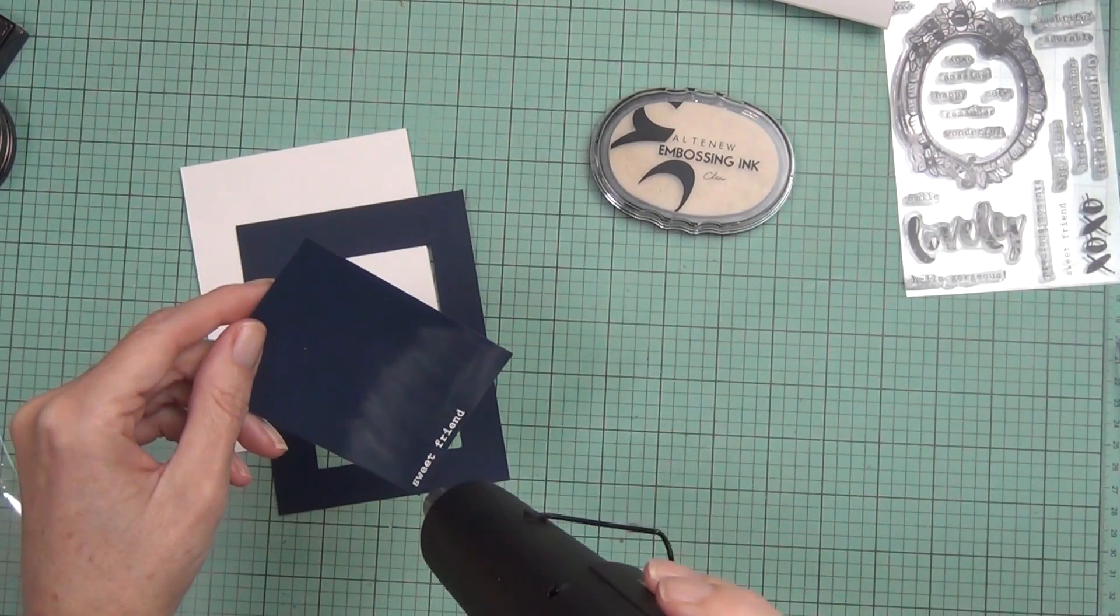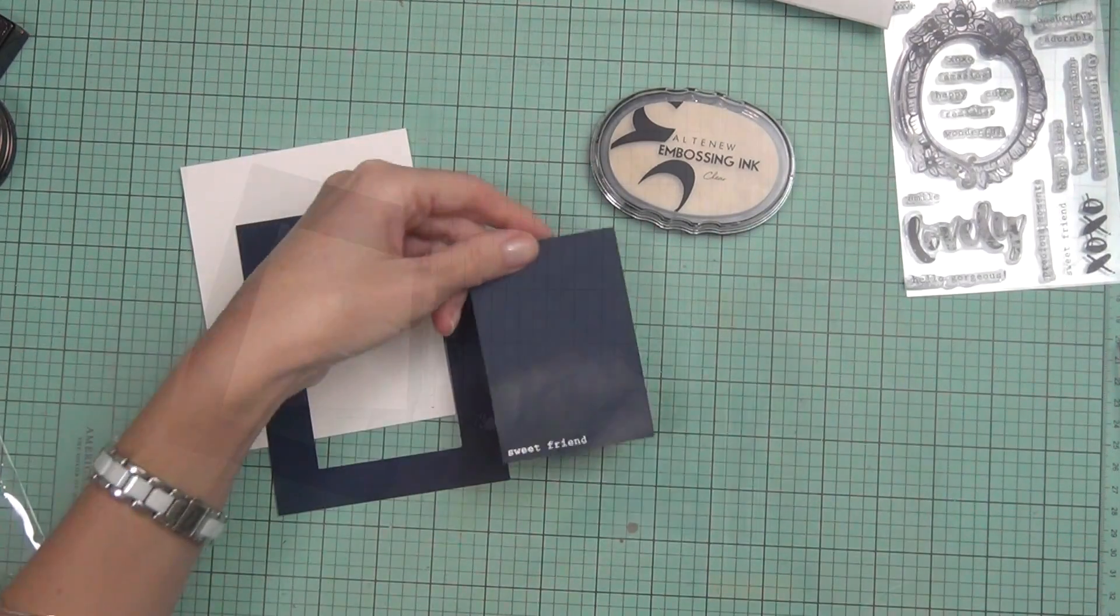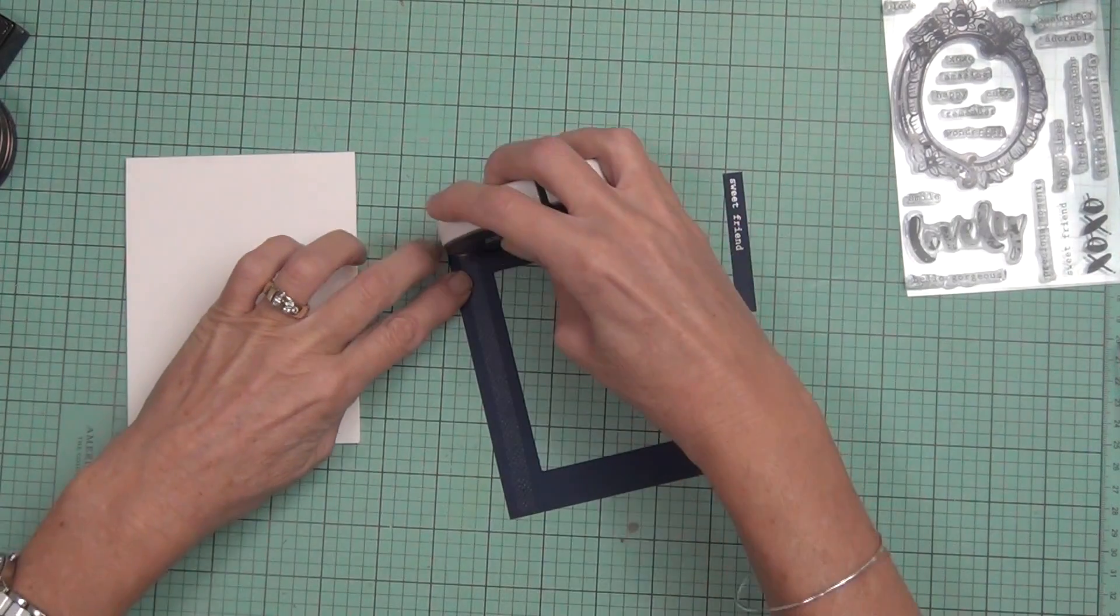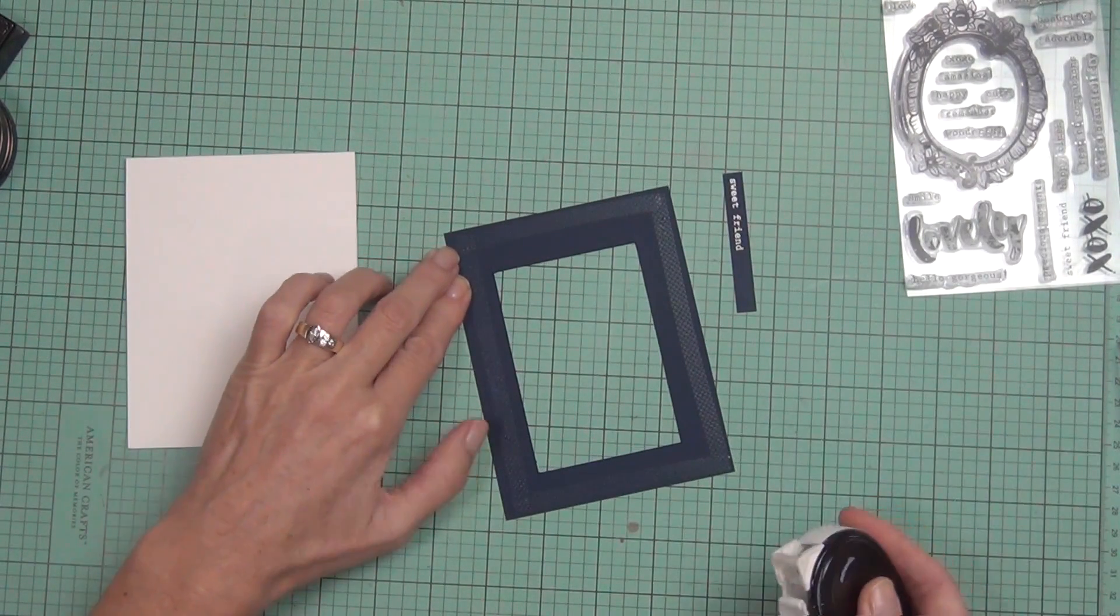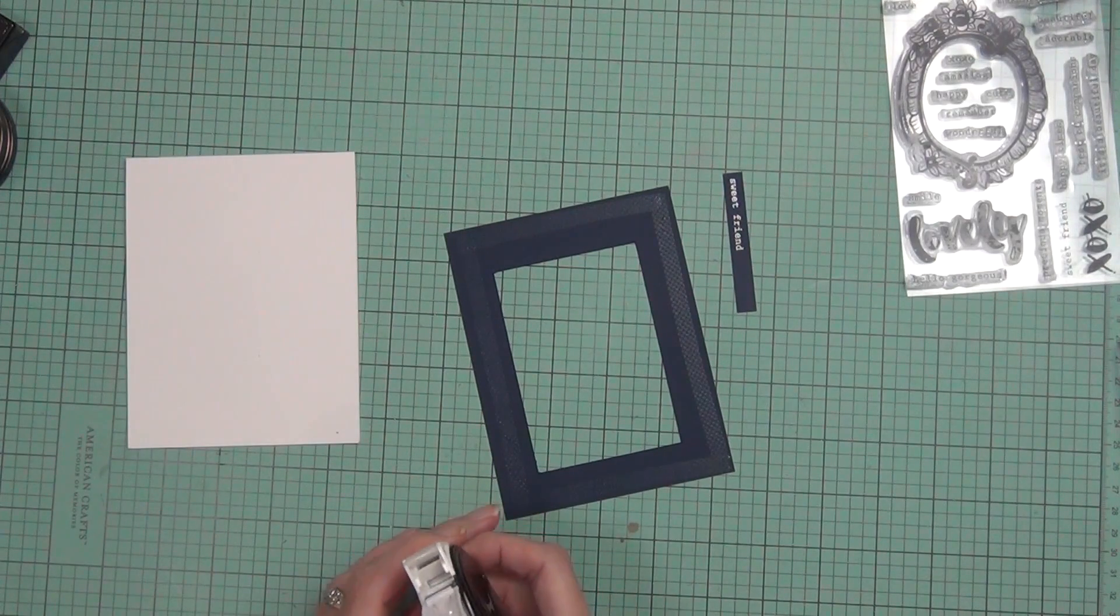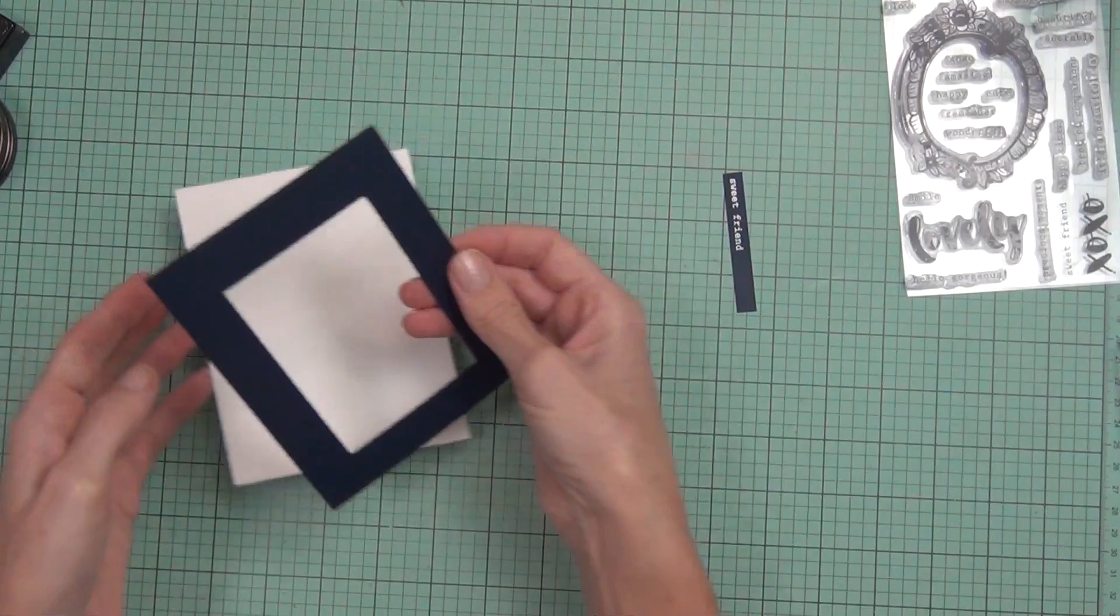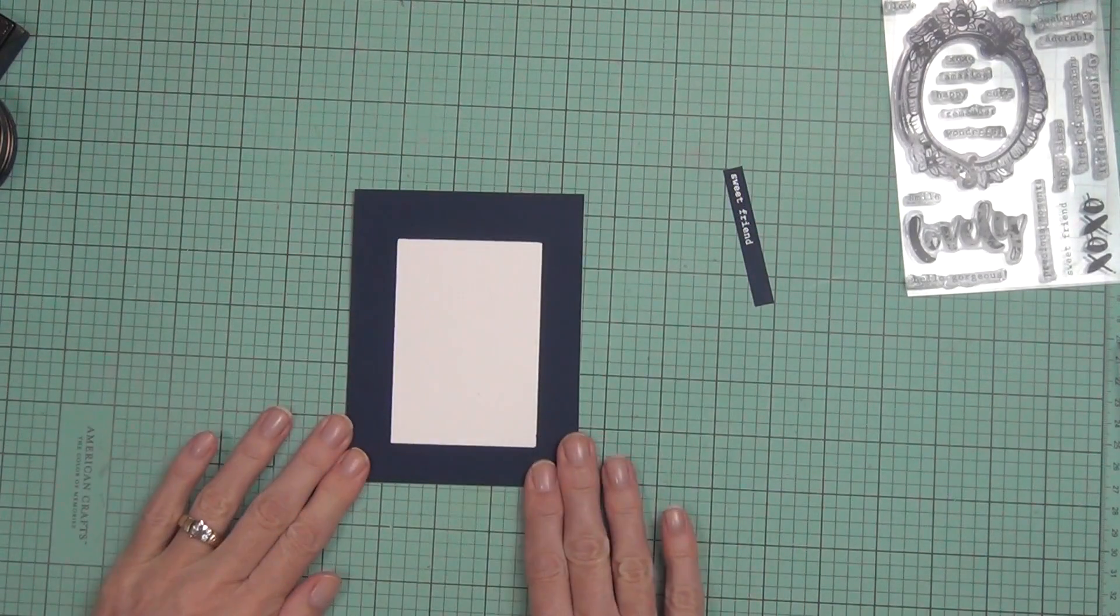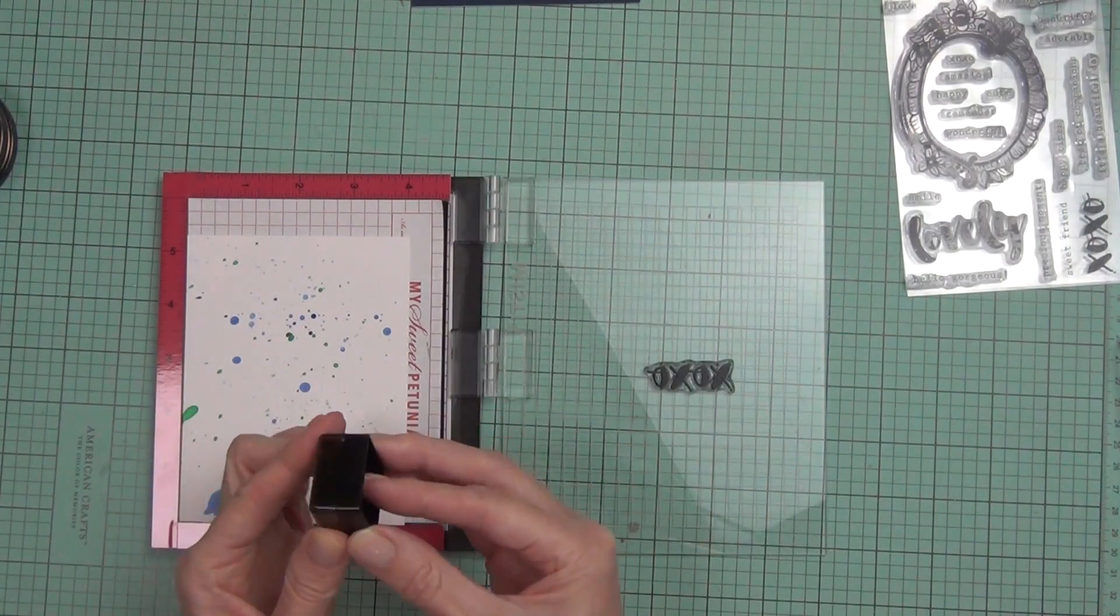I wanted a little border around the edge of my panel, and I also wanted to add a sentiment. So I've white heat embossed the Sweet Friend sentiment, and then I actually cut the center out of my border—the layering border that's going to be behind my panel. No one's ever going to know, but I got a sentiment and a piece of scrap cardstock out of there.